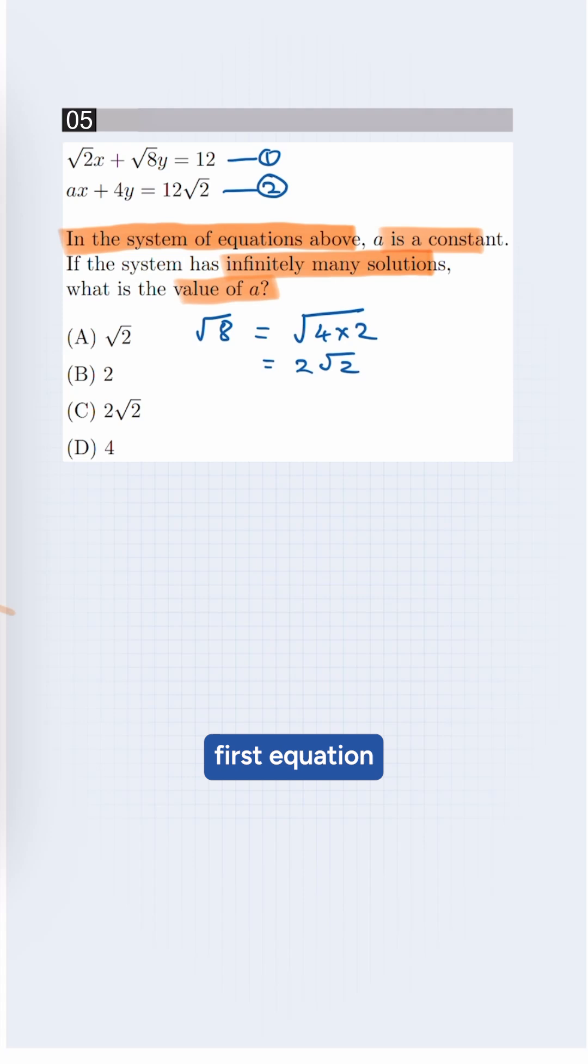Putting this into our first equation, it will be root 2x plus 2 root 2y equals 12. Now we need to multiply both sides by root 2.